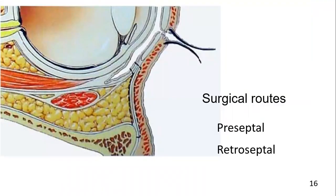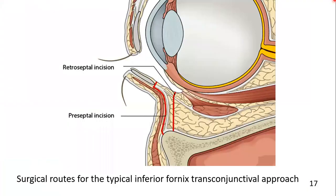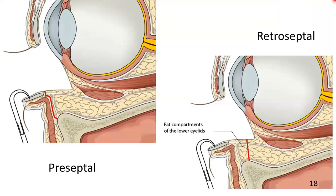The typical inferior fornix transconjunctival approach can use two different routes to access the infraorbital rim — that is preseptal and retroseptal. The two approaches vary in relation to the orbital septum on the pathway to the infraorbital rim. Here you can see the orbital septum, the preseptal approach, and the retroseptal approach. Here is another view for the preseptal and retroseptal incision.